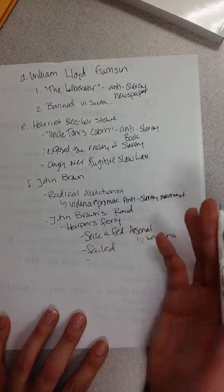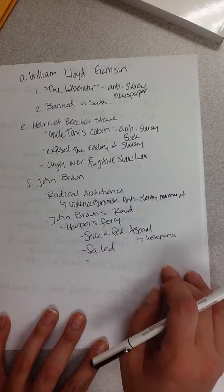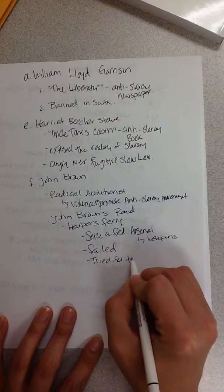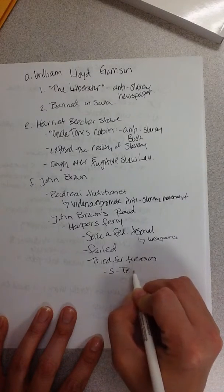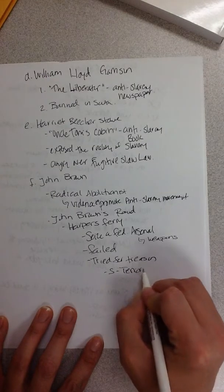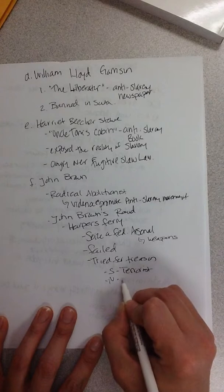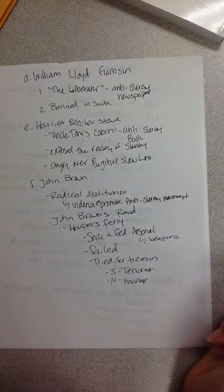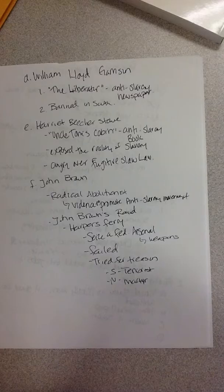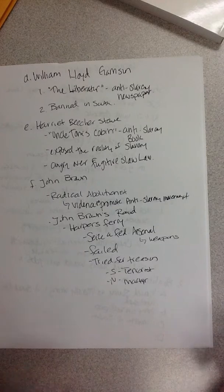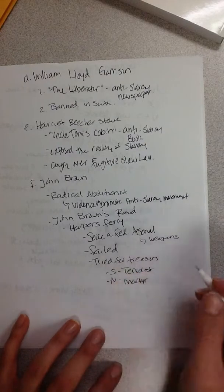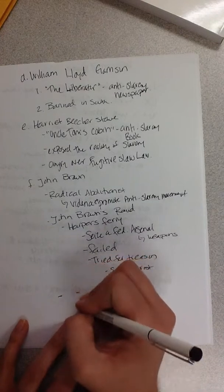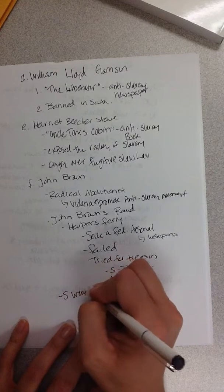John Brown is going to be killed — they're going to hang him because he gets arrested. All his sons are going to die, he's going to get stabbed, arrested, and tried for treason. In the South, they're going to view him as a terrorist, and his death will be seen as justifiable. In the North, he's going to die as a martyr — someone who died for a good cause. The South was terrified that slaves were going to revolt because of John Brown's raid, and so they're going to put stricter slave laws in place to keep them from revolting.